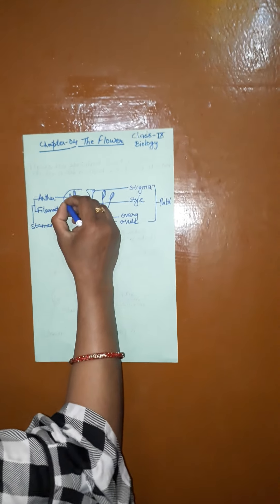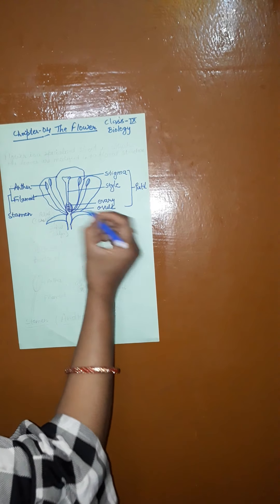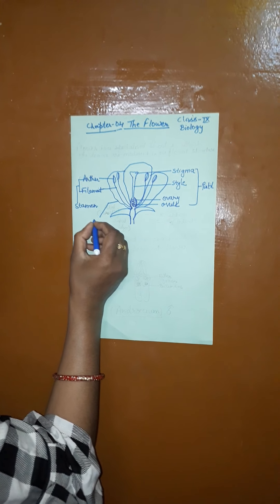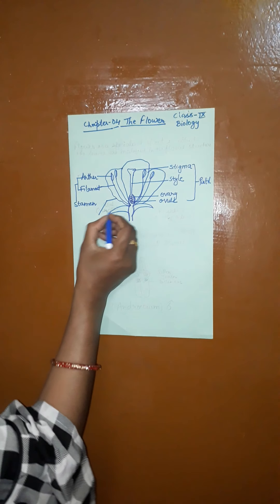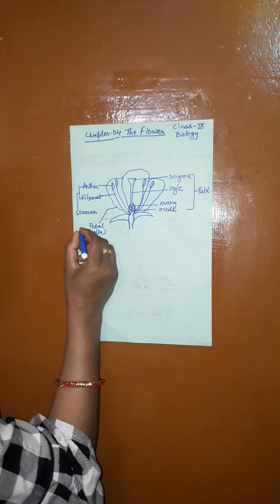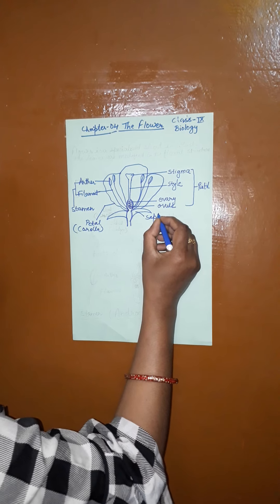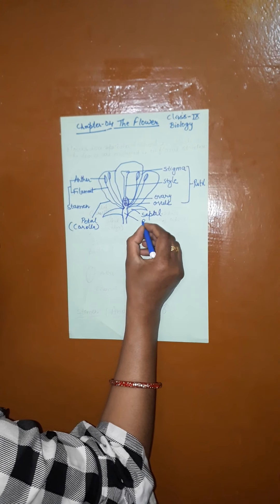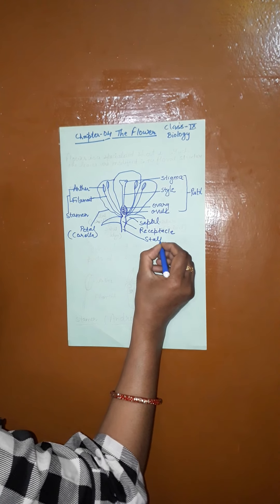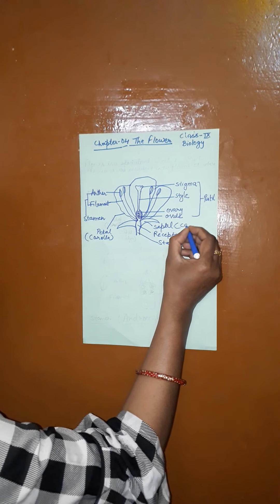This very colorful part of the flower is the petal. In biology or botany — botany is the branch of biology in which we study about plants — the petal is called corolla. This green structure is the sepal, also called calyx. And this is the receptacle. This thinner one is the stalk, or pedicel.